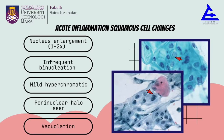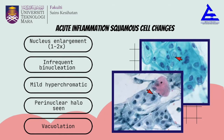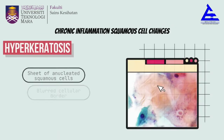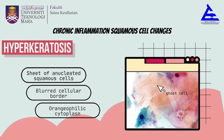Additional characteristics of acute inflammation squamous cell changes include infrequent binucleation, mild hyperchromasia, and presence of perinuclear halo and vacuolation.